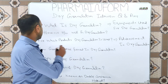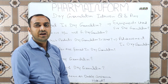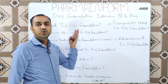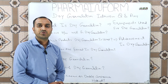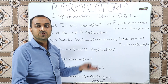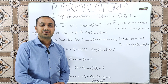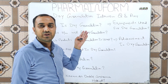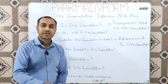The next question is: for which products do we use the dry granulation method? For those products which are degraded by moisture and heat, we use the dry granulation method. In simple words, heat-sensitive and moisture-sensitive products are manufactured by the dry granulation method.